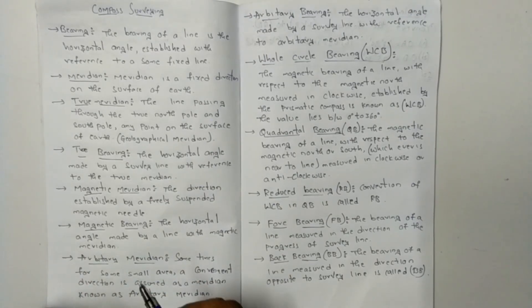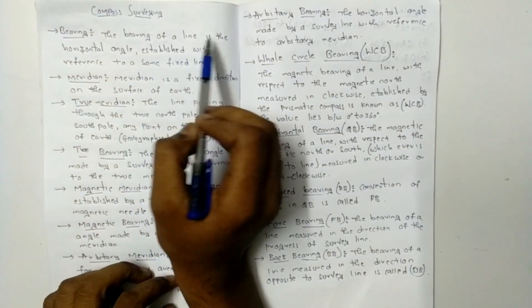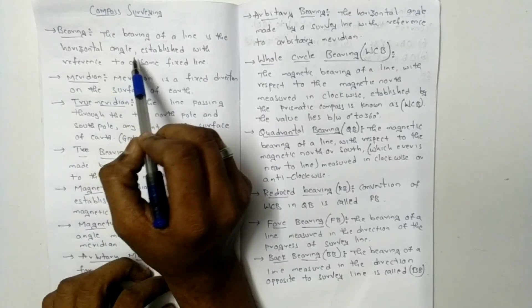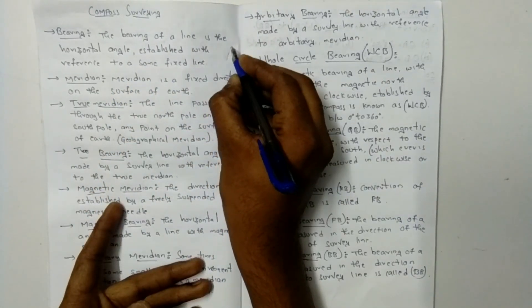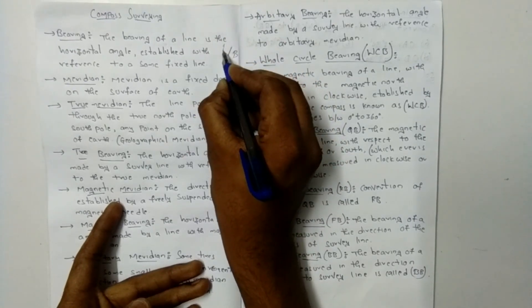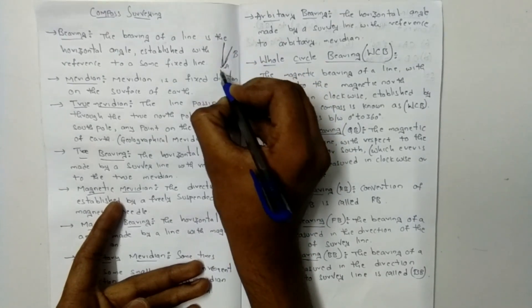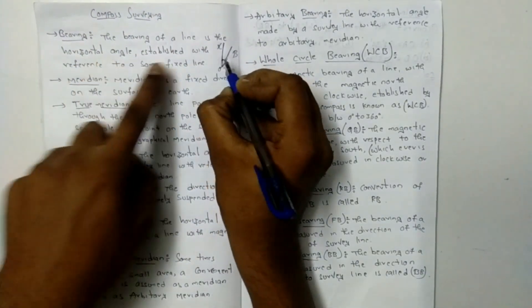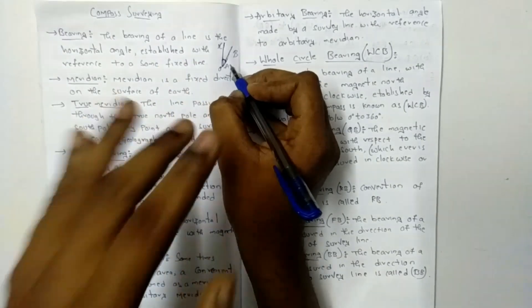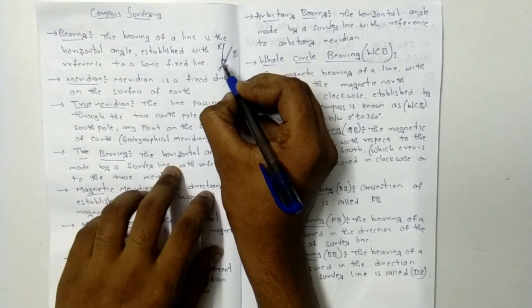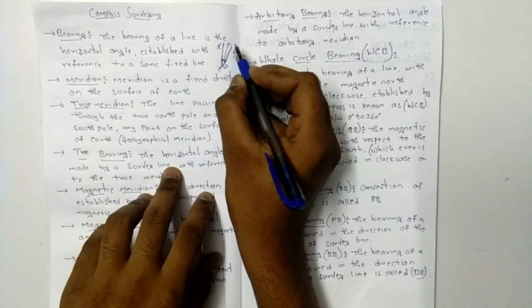The first definition is the bearing. The bearing of a line is the horizontal angle established with reference to some fixed line. This line is A-B and the reference line is O-X. The horizontal angle between O-X and A-B is the bearing.